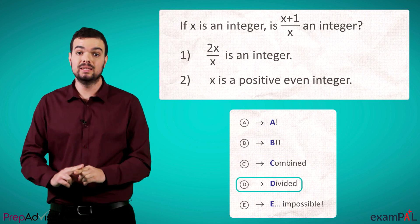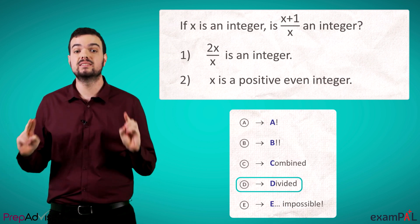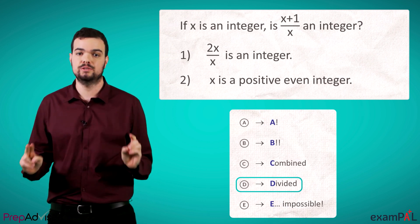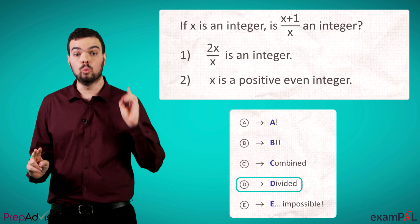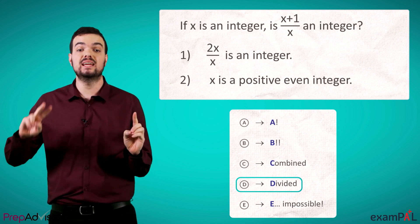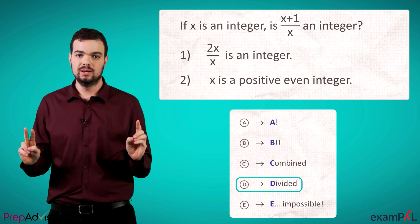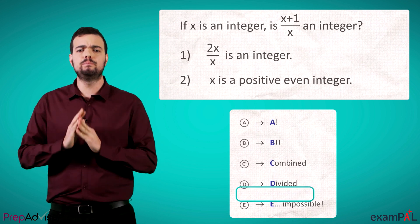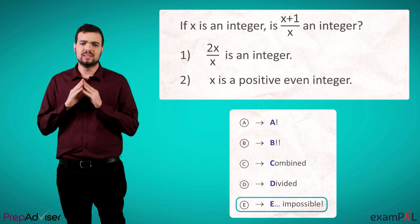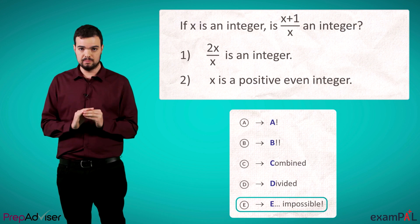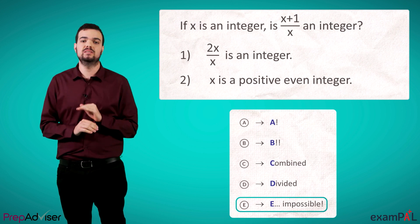D: Divided. Each statement, on its own, gives us sufficient information to answer the question. Statement one is enough on its own, and statement two is also enough on its own. E: Impossible. The data given, even when combined, is insufficient to solve the question.